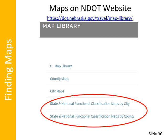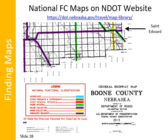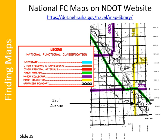As an example, to find the national functional classification for 325th Avenue south of Saint Edward in Boone County, click the state and national functional classification maps by county on the map library screen. That brings up the county map index. Click the national link to get the national functional classification map for Boone County. The legend identifies the map as national functional classification. Saint Edward is in the southeastern corner of the county. 325th Avenue south of Saint Edward is color-coded yellow, indicating a national functional classification of minor collector.